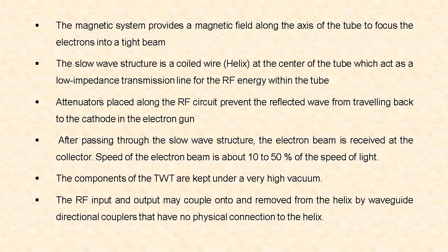The slow wave structure is a coiled wire, i.e. a helix, which is at the center of the tube and acts as a low impedance transmission line for the radio frequency energy within the tube. The attenuators placed along the RF circuit prevent the reflected wave from traveling back to the cathode in the electron gun. After passing through the slow wave structure, the electron beam is received at the collector. The speed of this electron beam is about 10 to 50 percent of the speed of light.